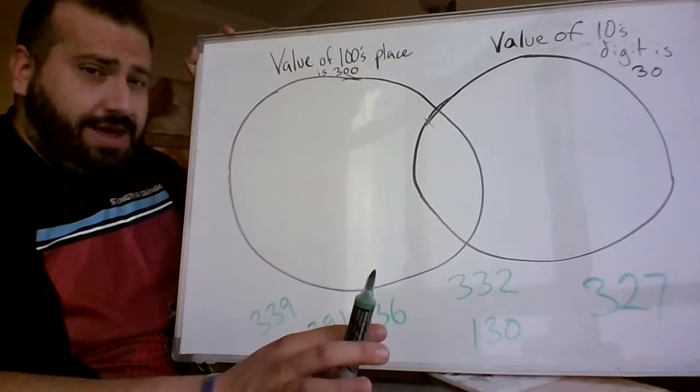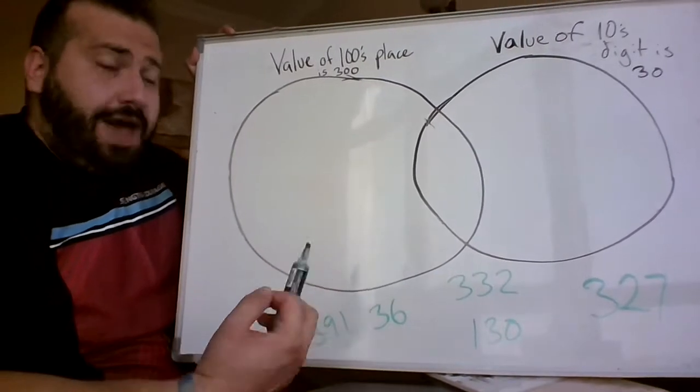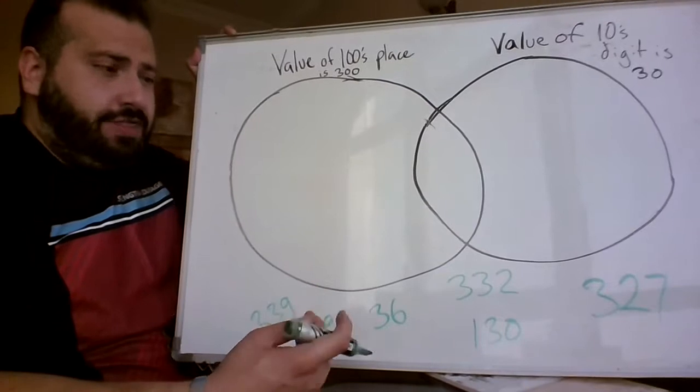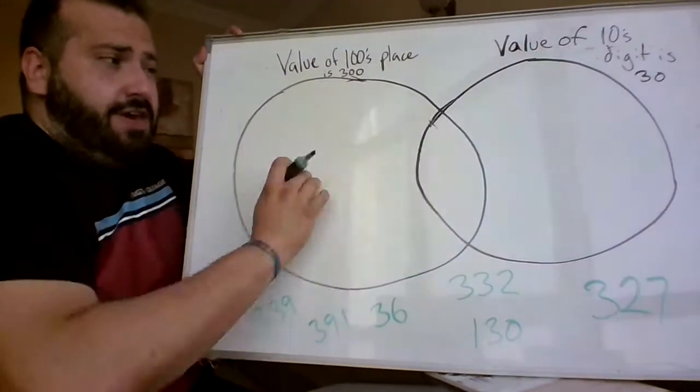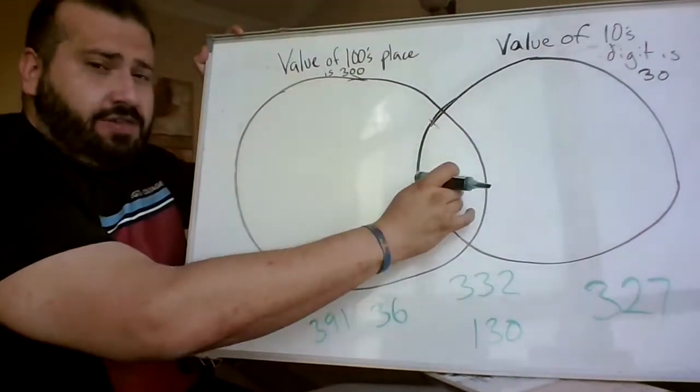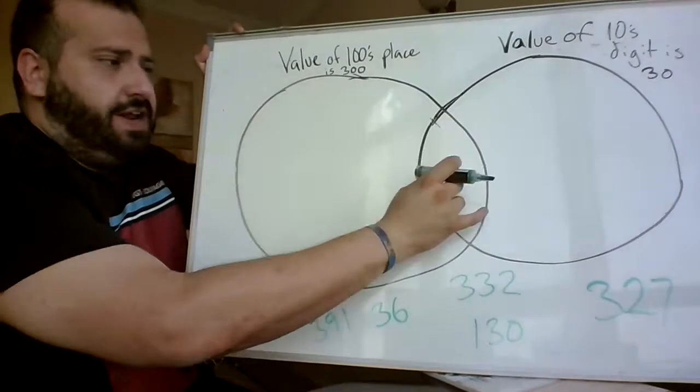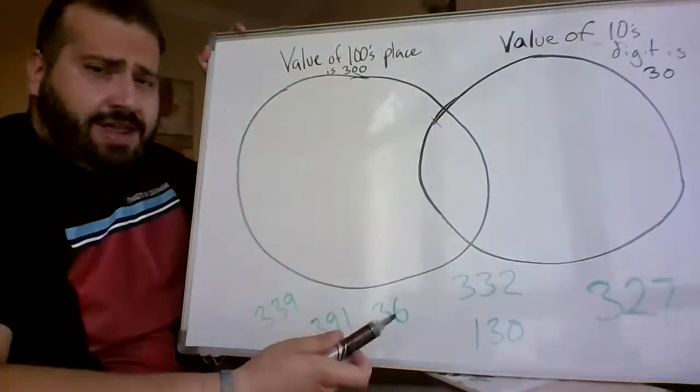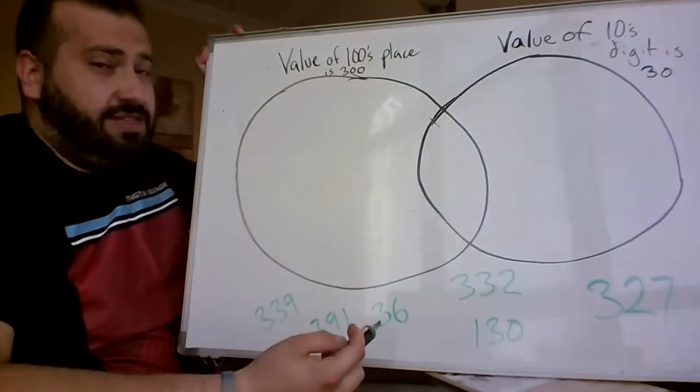So a Venn diagram is basically a way to graph data and compare things that are different and compare things that are the same. Here's our different things. Here's our things that are the same. And today we're going to look at different numbers and similar numbers.